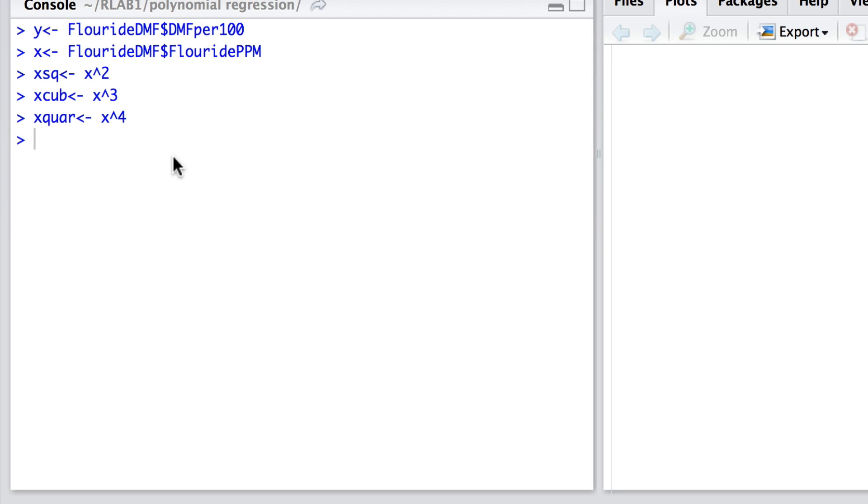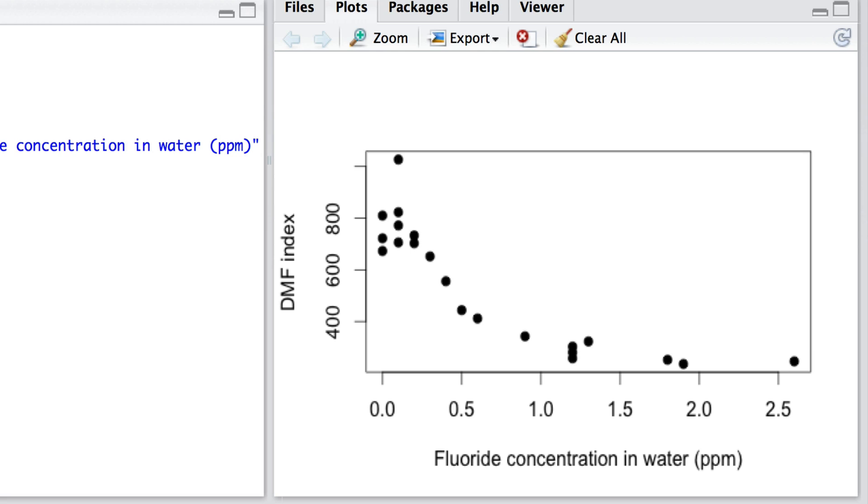Now let's simply plot a graph of the relationship between x and y. So this is what we do here, and we find that there is apparently a relationship between this DMF index and the fluoride concentration, and it appears as somewhat non-linear overall.